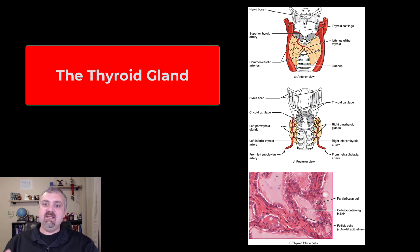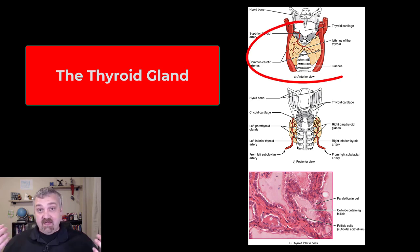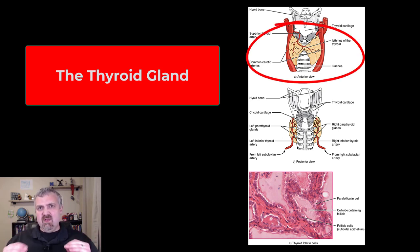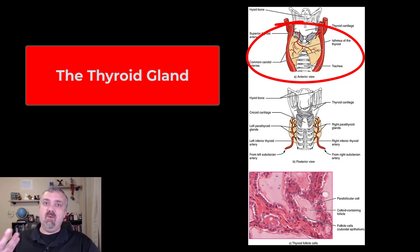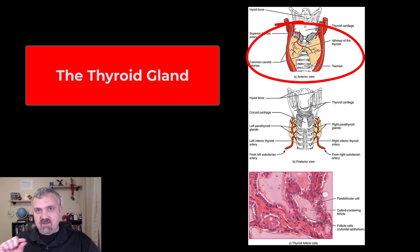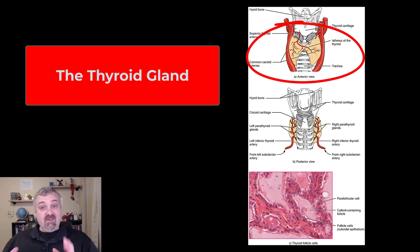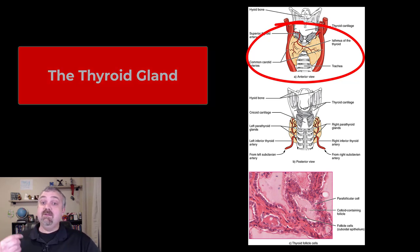First let's look structurally at the thyroid gland. You can see it there at the top. It's a butterfly-shaped organ sitting just below the larynx, your voice box. It sits right in front of your trachea, or what we call the windpipe. It has two lobes, one on each side, with that little isthmus — that narrow area in between. So that's the gland itself.